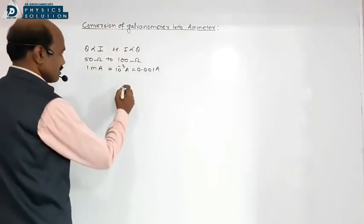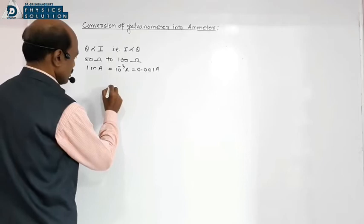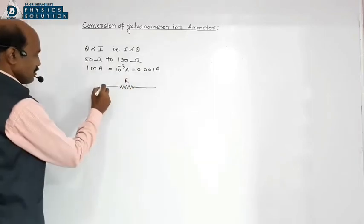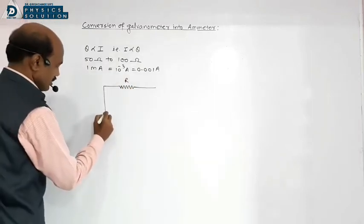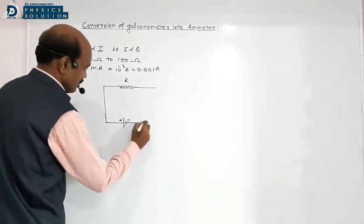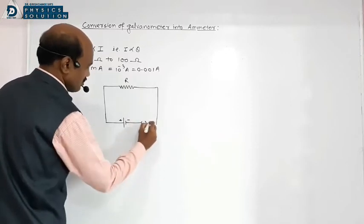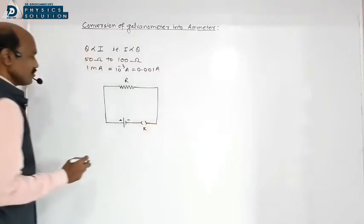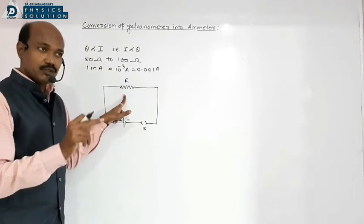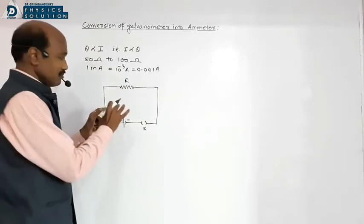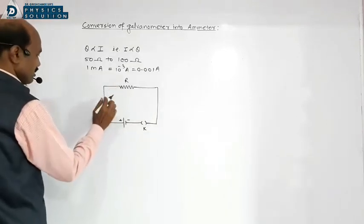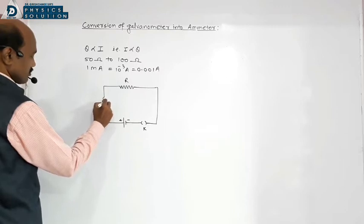Galvanometer can be used as ammeter and voltmeter. Starting with conversion of galvanometer into ammeter — an ammeter is a device which measures current through any circuit. Ammeter is always connected in series with external resistance to measure the current. Suppose we connect a galvanometer into the circuit.